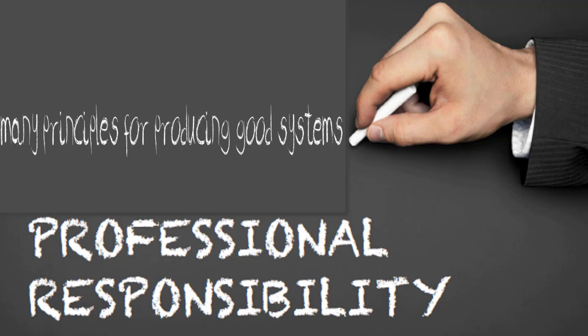Here are a few principles for producing good systems. Most concern software developers, programmers, and consultants, while some apply to professionals in other areas who make decisions about computer systems. Understand what success means for a system to be successful. Include your users — such as medical staff, technicians, and office workers — in the design and testing stages. Do a thorough, careful job when planning and scheduling a project, and always allocate sufficient time and budget for testing.